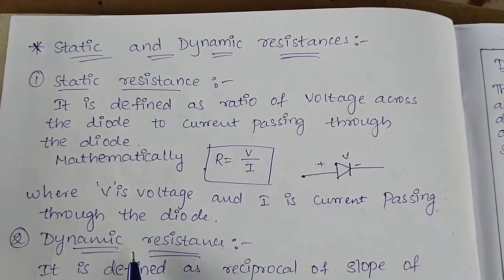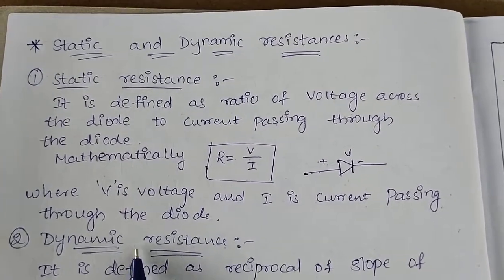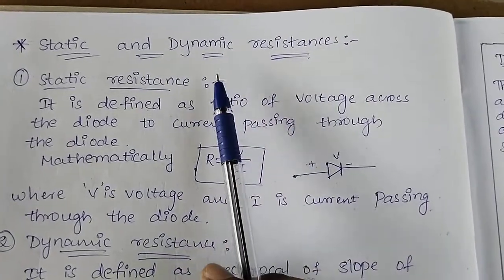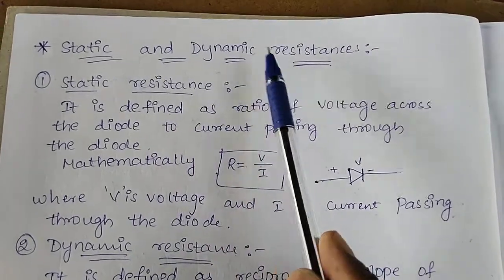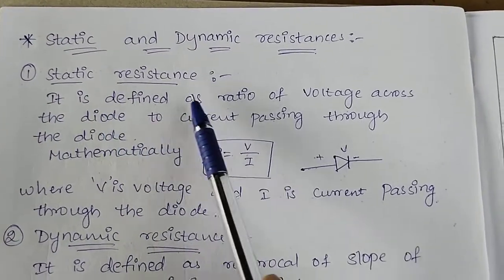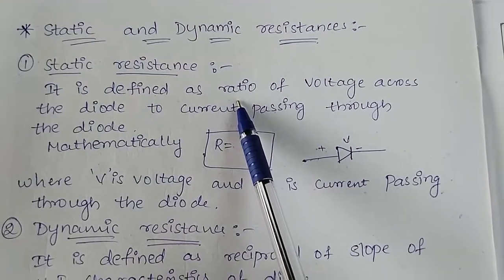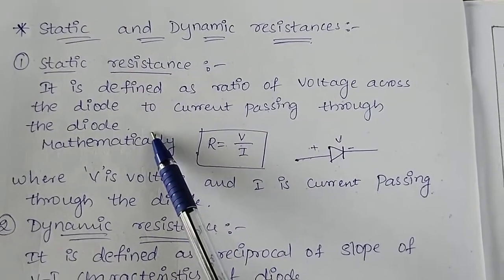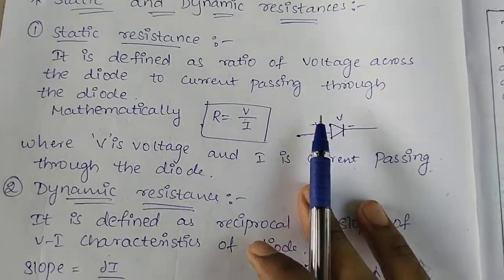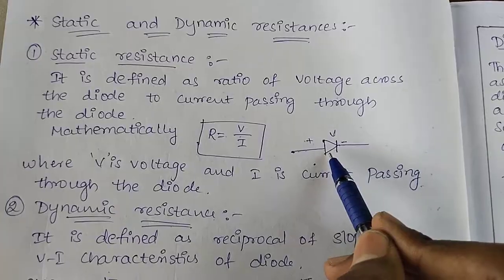Good morning friends. Today we will learn about a small topic: static and dynamic resistance. Static resistance is defined as the ratio of voltage across the diode to the current passing through the diode.